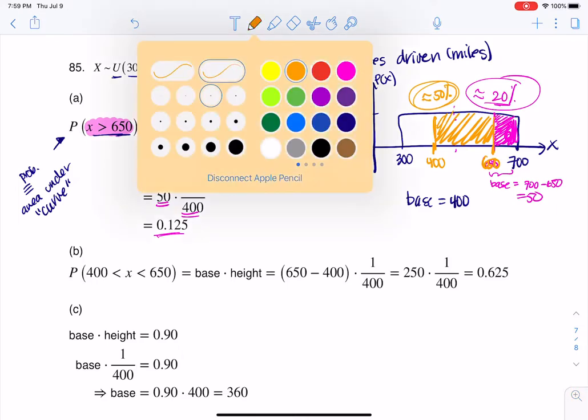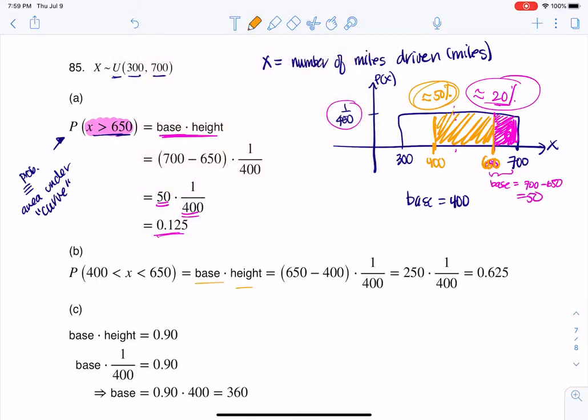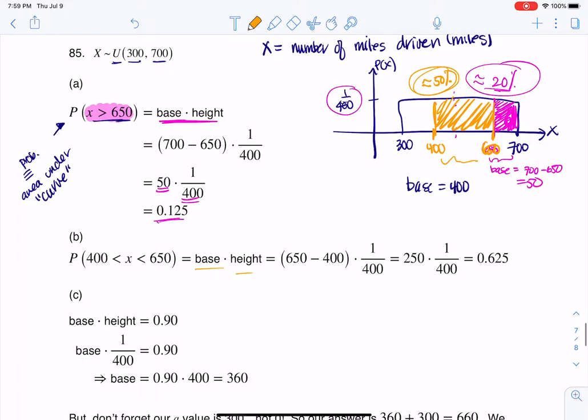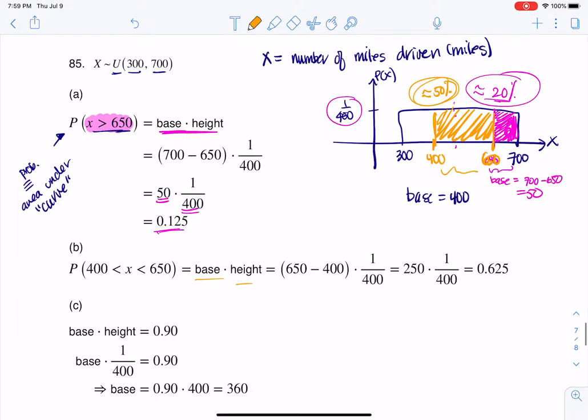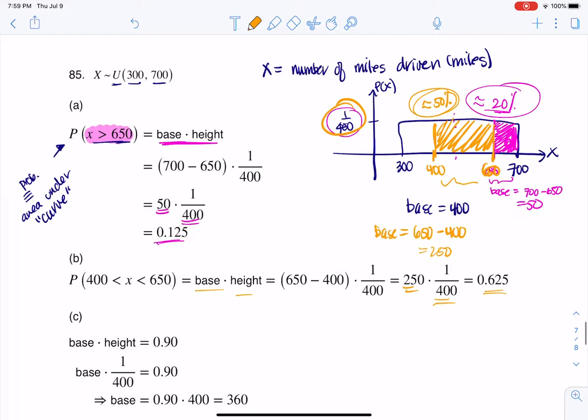So here we go. We need to go base times height. Base times height. Well, my base now, my new base, my base here is going to be 650 minus 400. So that's going to give me 250 for my orange base. And that's why you see the 250 there. And the height, it's uniform, so it's one out of 400, 62%, or 62 and a half percent. And again, this number, it's a little bit off from here. But it's close enough. I'm happy enough that I knew it was around 50% and I got 63% here. That's great.